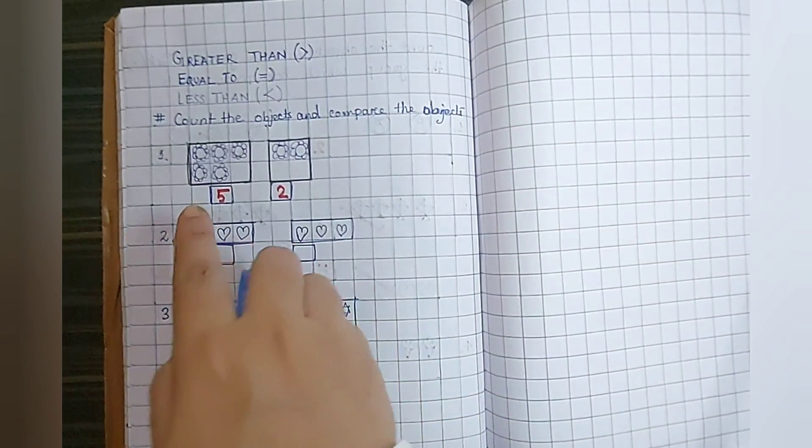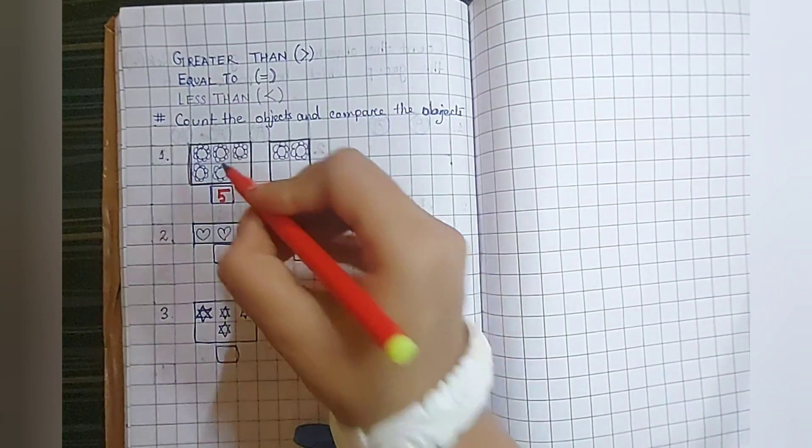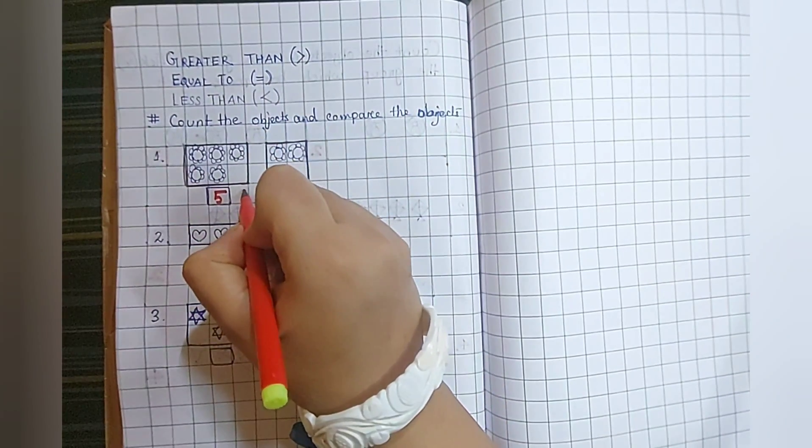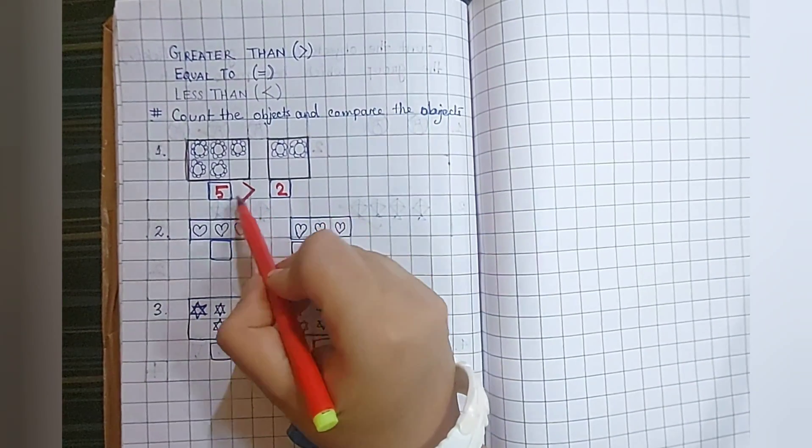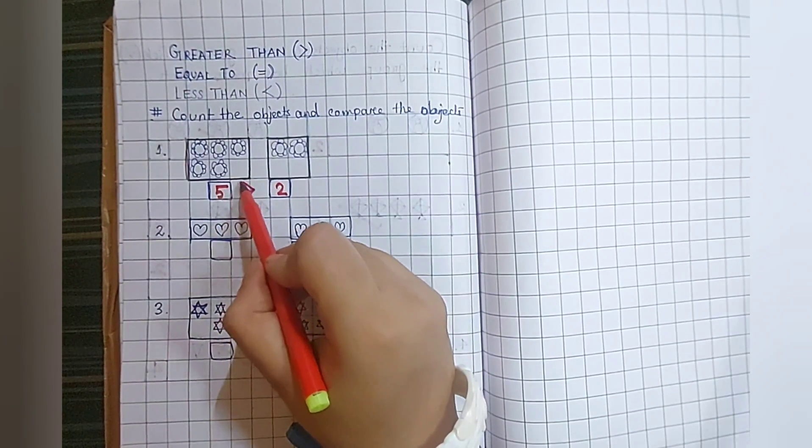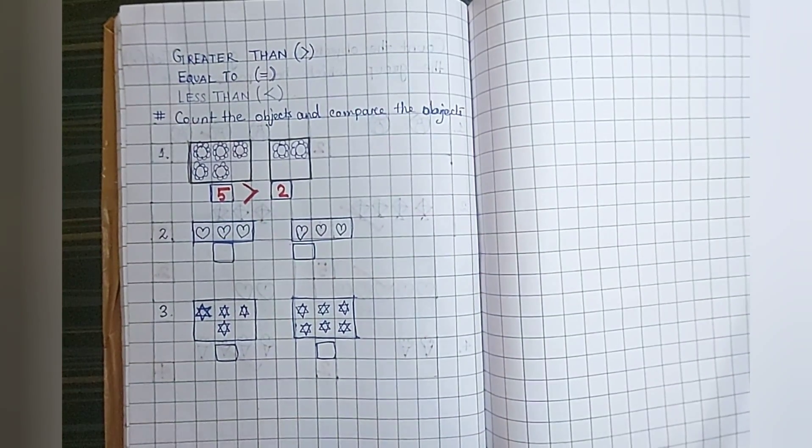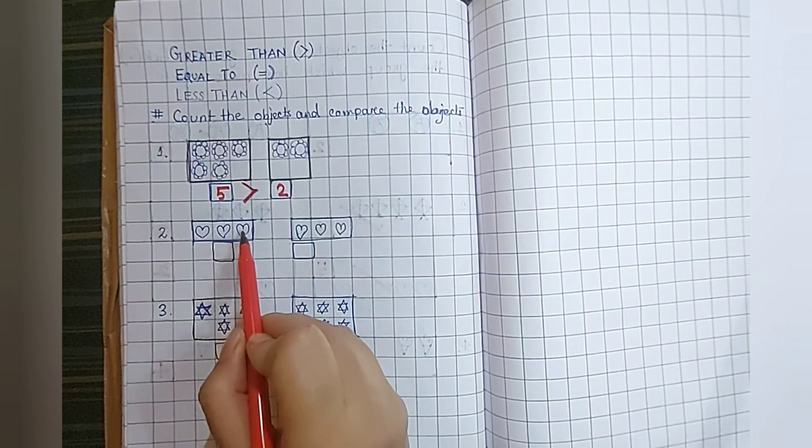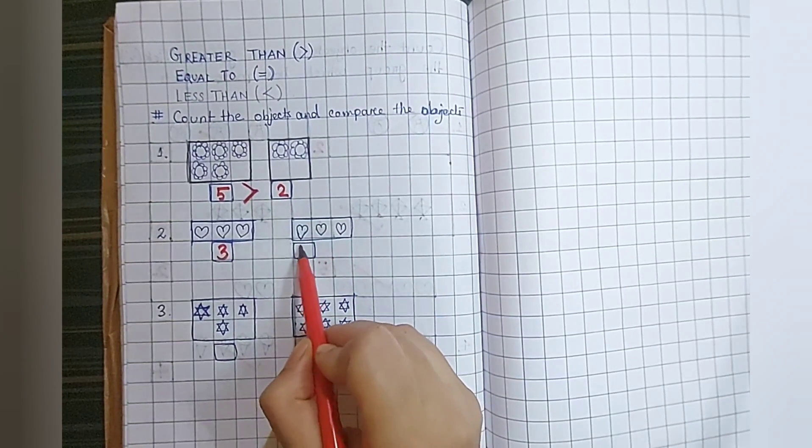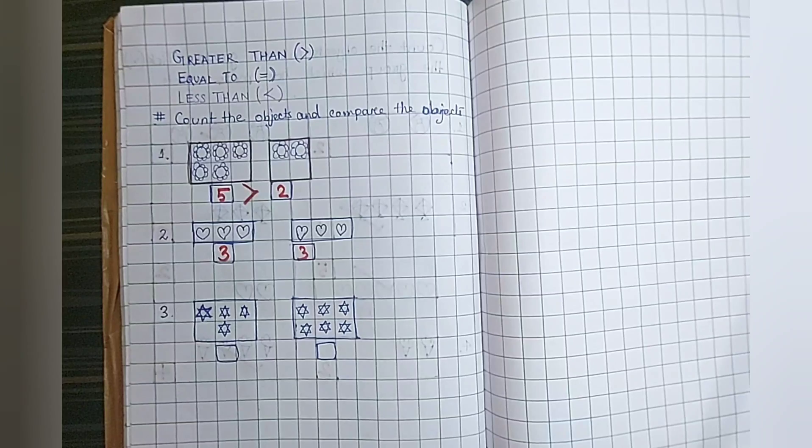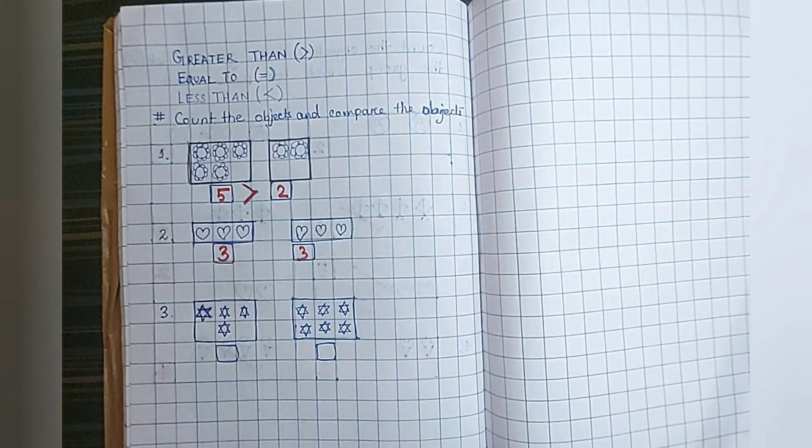Come back to our worksheet. Which number is more? Five. Then the alligator will eat five. That means the first symbol we are using, the alligator will eat more. That means five is more. Alligator will eat the number five. Now one, two, three. Count the hearts. One, two, three. Now check through your fingers. Three, three are equal. Yes, that means we are using this symbol.